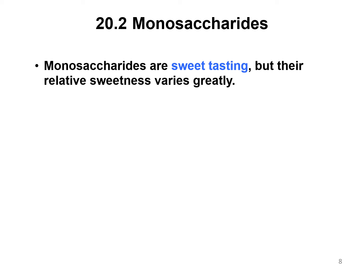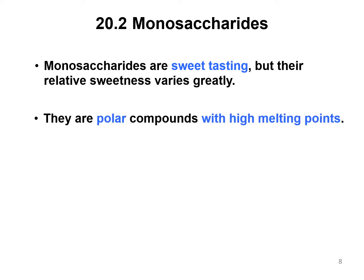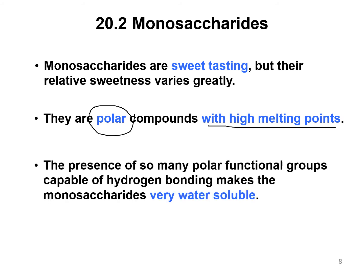Monosaccharides are sweet, but their sweetness varies depending upon which monosaccharide it is. They are polar compounds with high melting points — if any of you have melted sugar, you know it takes quite a bit of heat to accomplish that. And because there are so many polar functional groups capable of hydrogen bonding, that makes these monosaccharides very water-soluble and easy to dissolve.